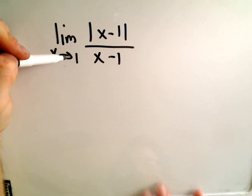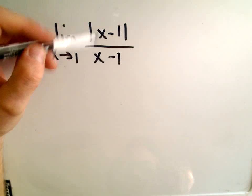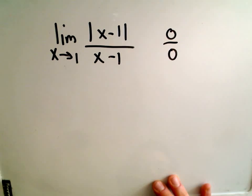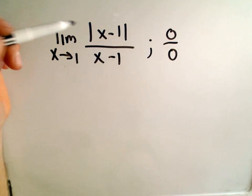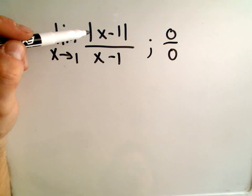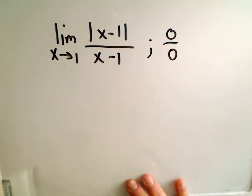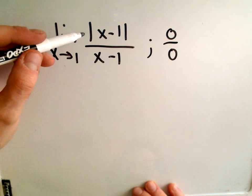The first thing you try to do with a limit problem is plug in the value. But notice if you plug in 1, we simply get 0 over 0. For those of you that have seen L'Hôpital's rule, how do you take the derivative of absolute value? So we're going to talk about a slightly different, algebraic way.